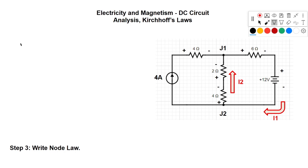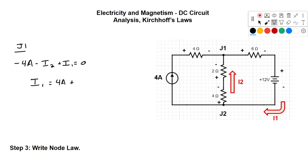Now we can write our node law. Pick a junction — I'll choose junction 1. We'll assume currents coming into a junction are negative and going out are positive. At junction 1: the 4-amp current is coming in, so negative 4 amps; I2 is coming in, so minus I2; and I1 is going out, so plus I1. All total equals zero. Moving the negative values over, we get I1 = 4 amps + I2, which is our node equation.